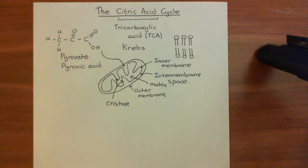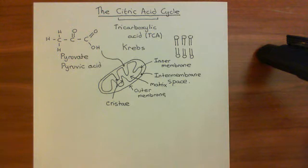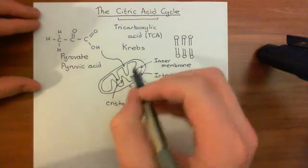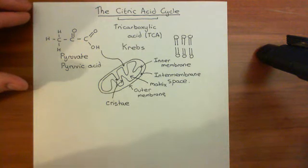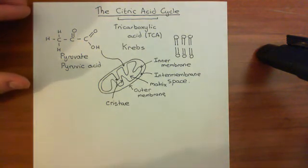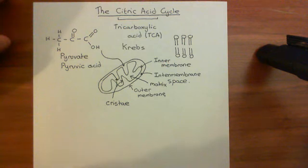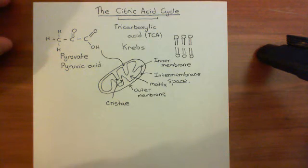Pyruvic acid cannot freely cross the inner membrane because it's very tight. This tightness is essential for the electron transport chain to work later — you have to build up a proton gradient across this membrane, and you don't want protons getting across freely. They have to go through the ATP synthase enzyme, but we'll come back to that.